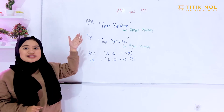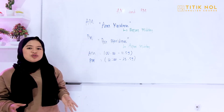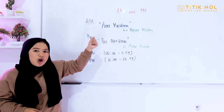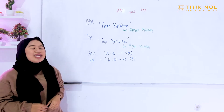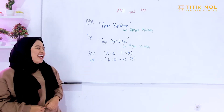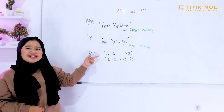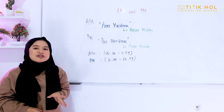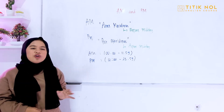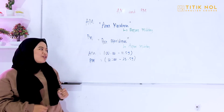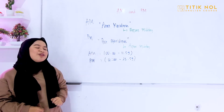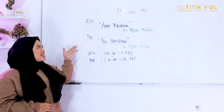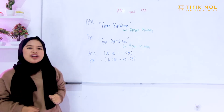AM comes from the Latin phrase 'ante meridiem', which in English means 'before midday'. AM covers from 12 midnight up to 11:59 in the morning. For example: 'I go to school at 6' — since 6 is within that range, you would say '6 AM'.